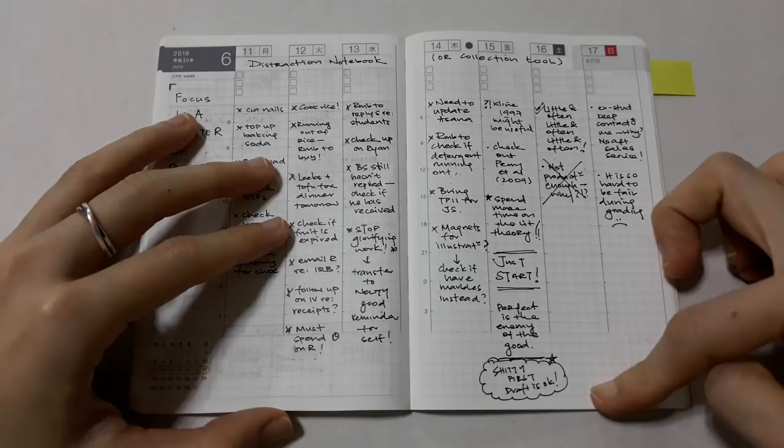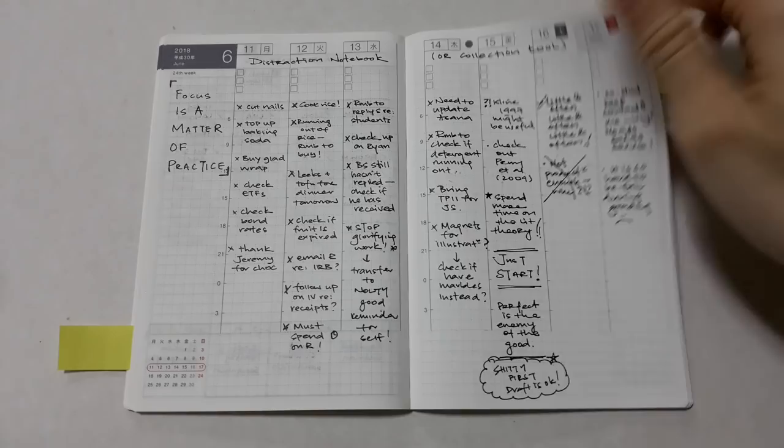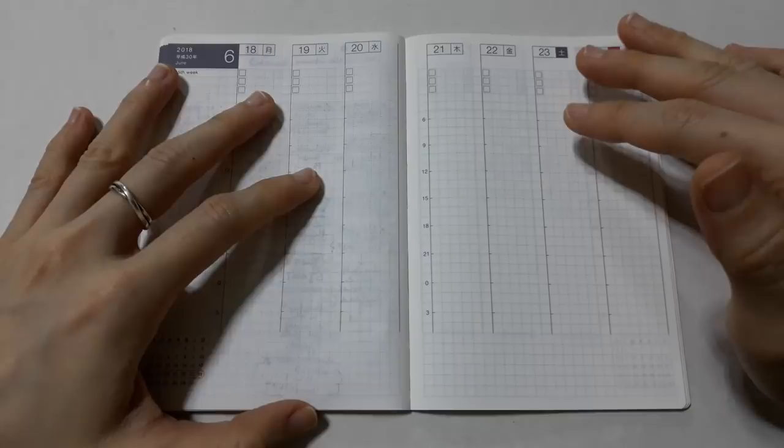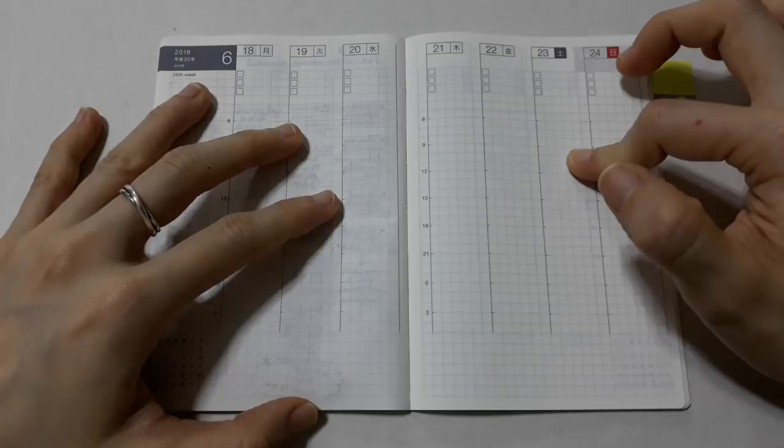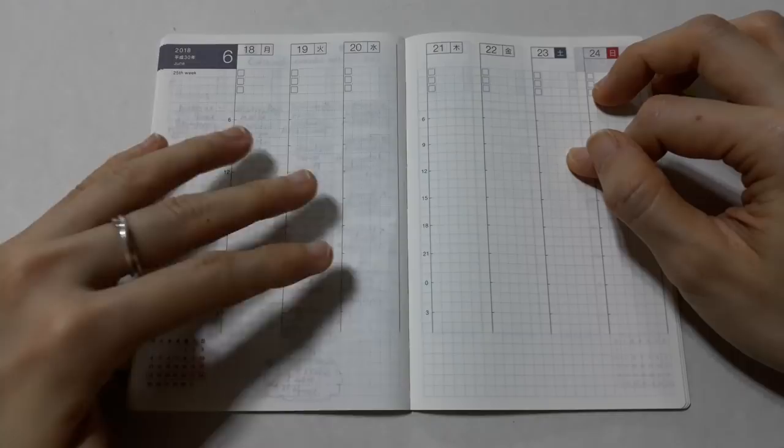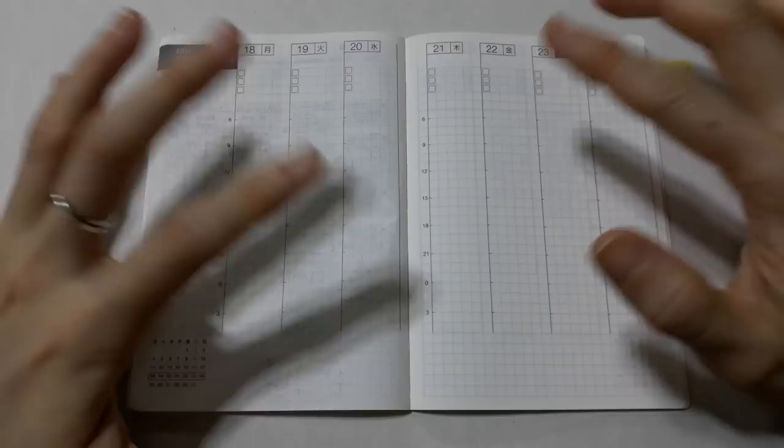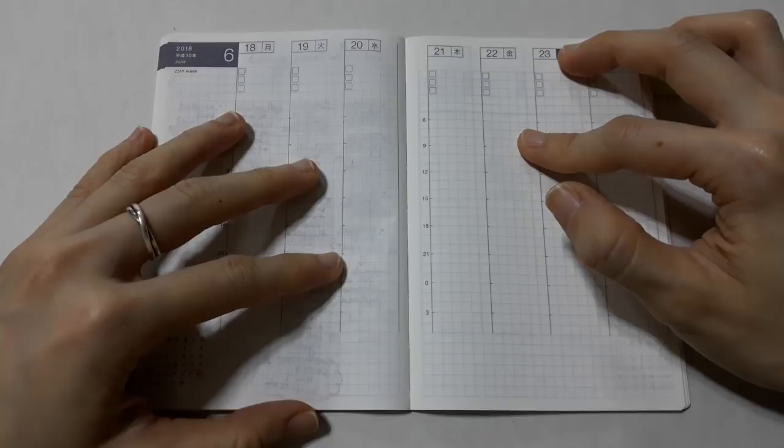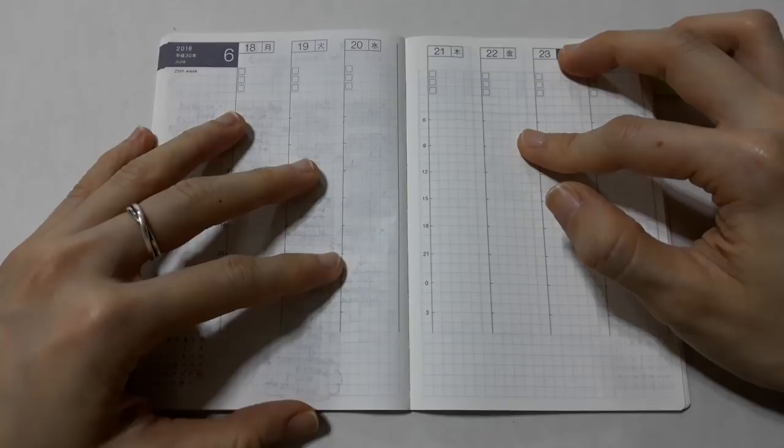So those are the 10 ways that you can use the weekly supplement. I hope that these ideas help you see the supplement in a new light. If you want to use these layouts but you don't have the supplement, you can reproduce these in a simple A6 dot grid journal. Now if you have found this video helpful, please like and subscribe. I'll be uploading videos rather sporadically from now on, so please hit the bell icon if you want YouTube to notify you when I post. As always, thank you so much for watching. Take care and bye-bye!